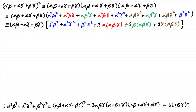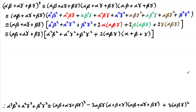Now what I'm going to do next is factorize these last three terms in this square bracket. If I do that, you're going to get two lots of alpha beta gamma, and then in this last bracket you've got alpha plus beta plus gamma.